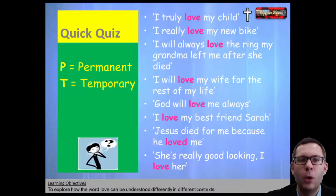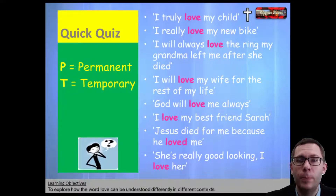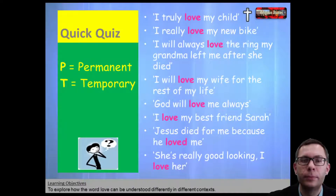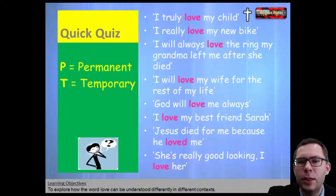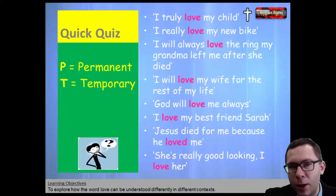Quick quiz then for your time — we like quick quizzes, so let's just see what you know. Which of these are permanent and which ones are temporary? I truly love my child. I really love my new bike. I will always love the ring that my grandma left me when she died. I will love my wife for the rest of my life. God will always love me. I love my best friend Sarah. Jesus died for me because he loved me. She's really good looking — I love her.